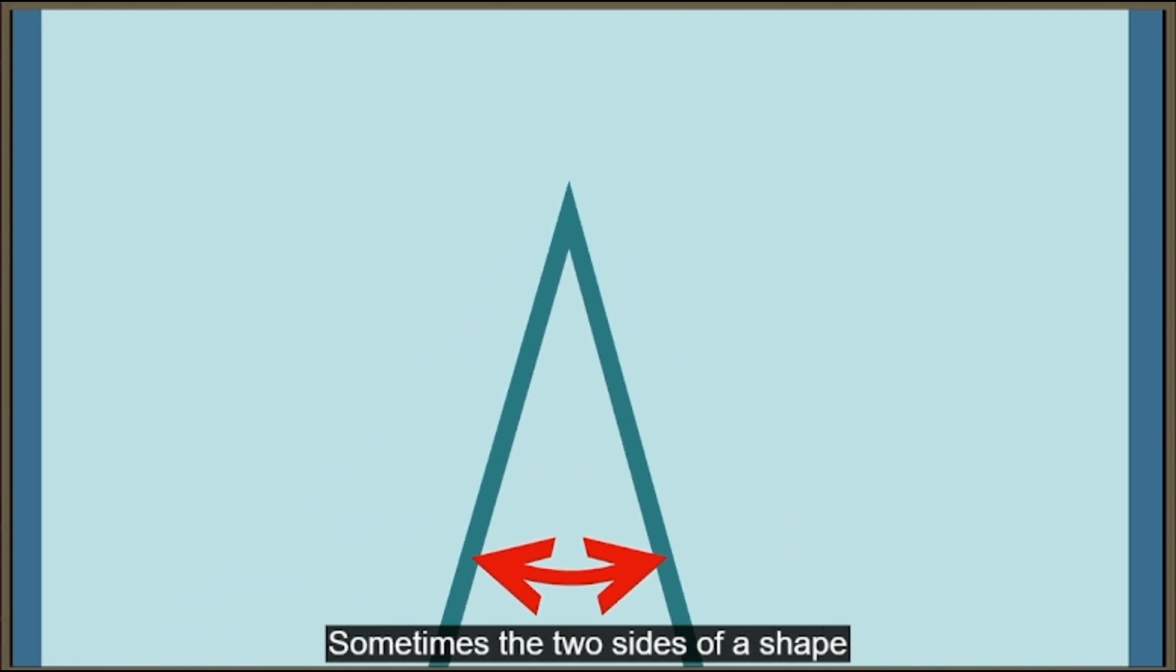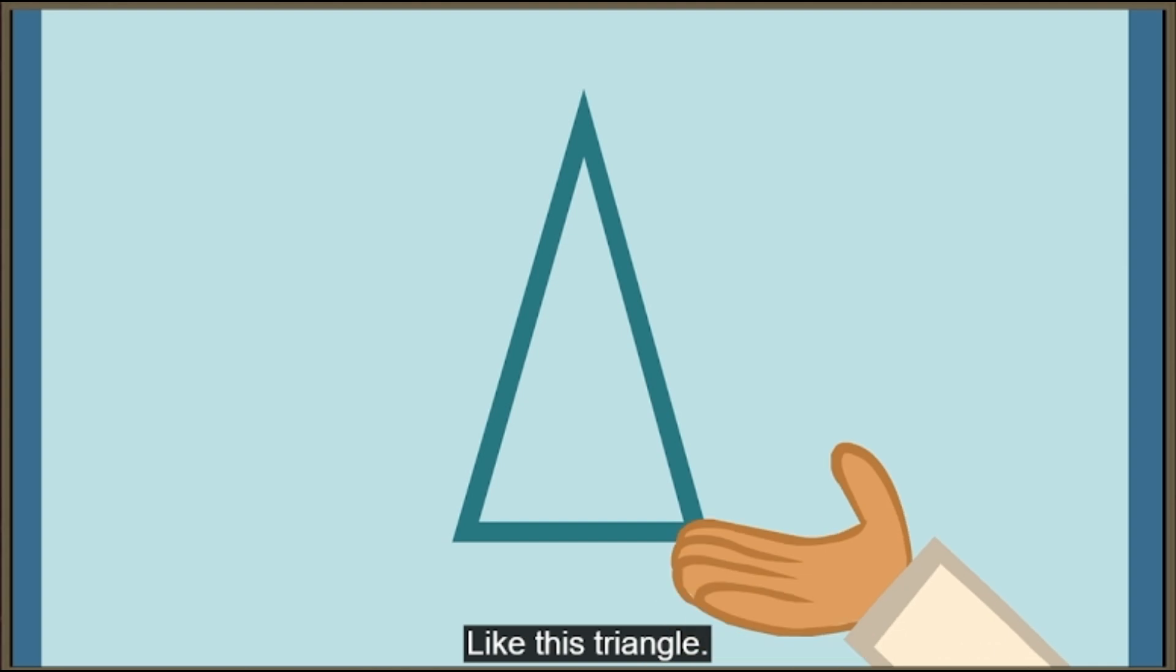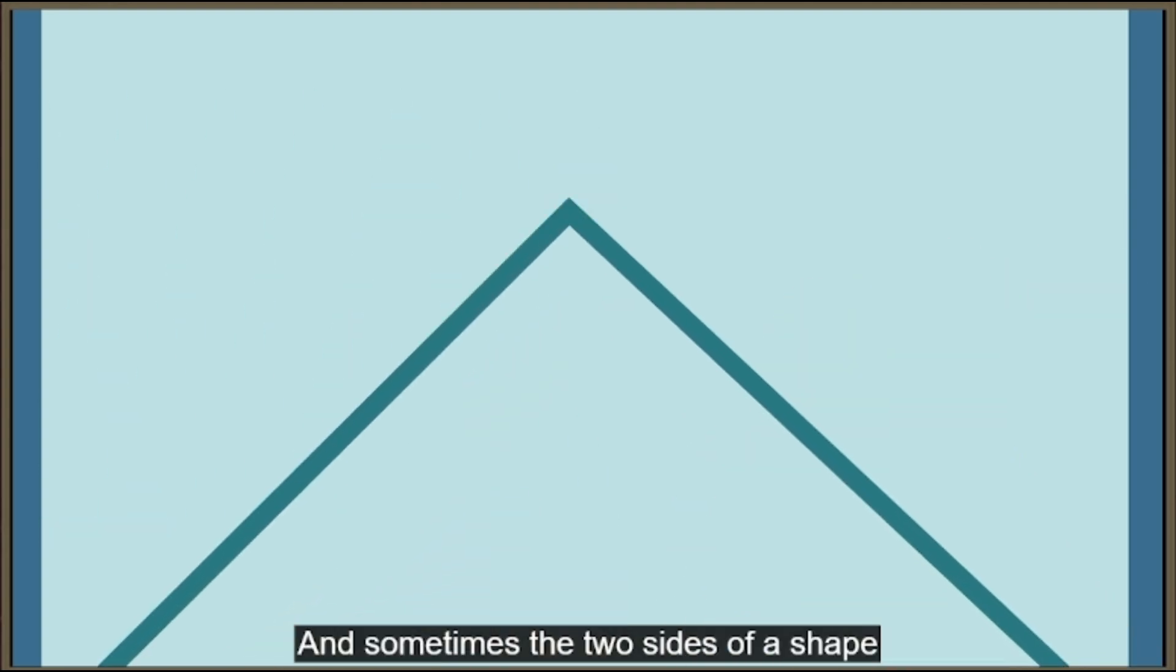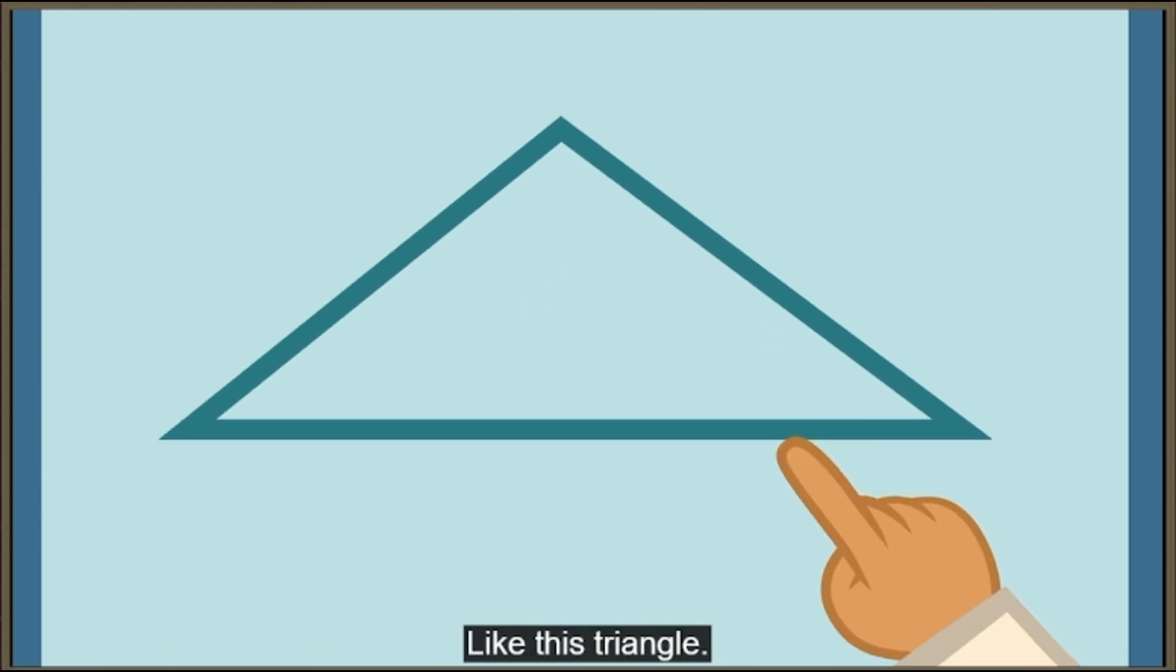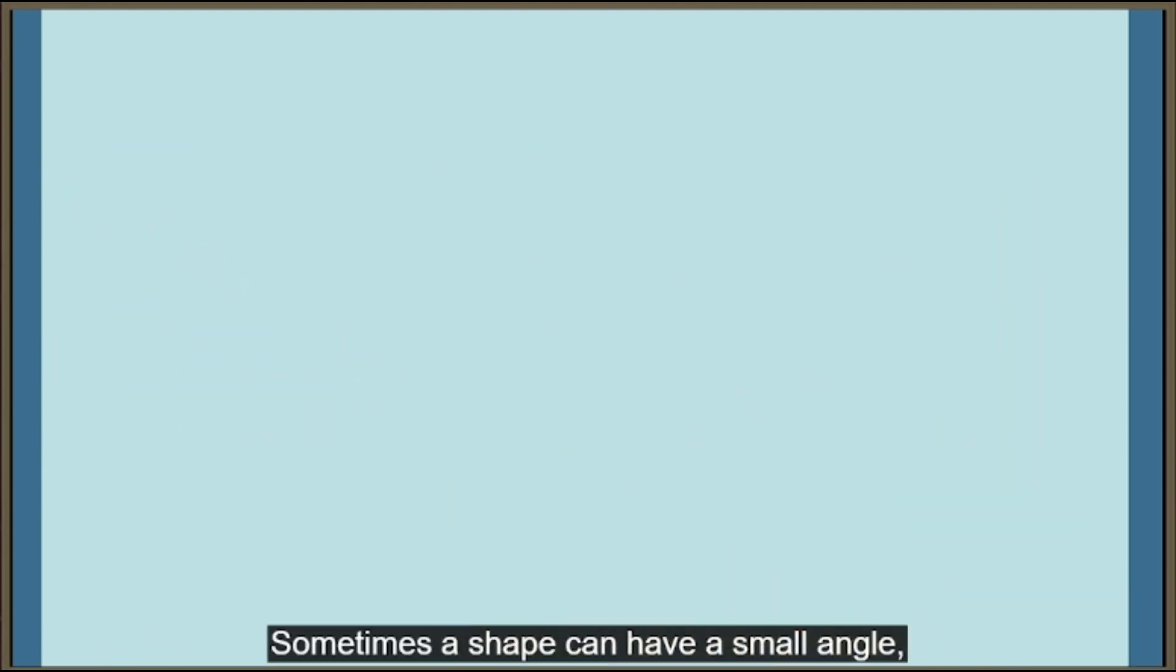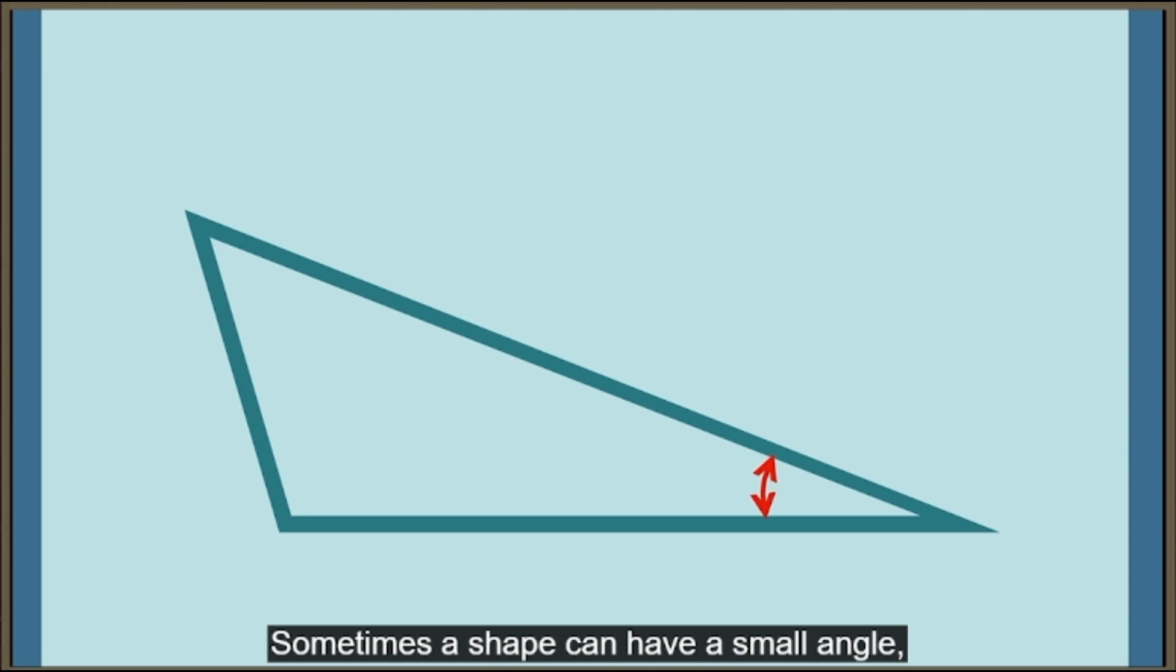Sometimes the two sides of a shape meet to make a very small angle, like this triangle. And sometimes the two sides of a shape meet to make a very large angle, like this triangle. Sometimes a shape can have a small angle, a large angle, and one in between, all in one shape.